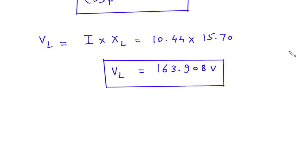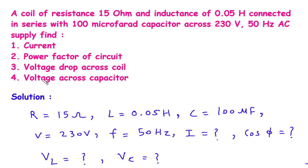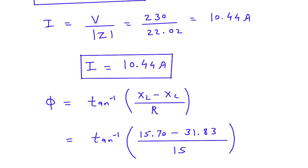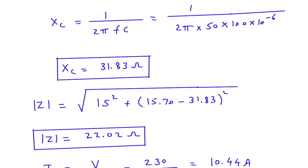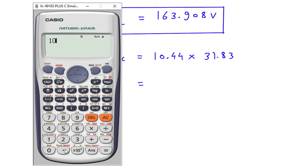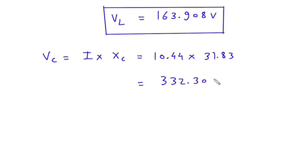Then we have to find the voltage across the capacitor. Voltage across capacitor is VC, and it equals I multiplied by XC. So VC equals 10.44 multiplied by XC, which is 31.83, giving VC equal to 332.30 volts.